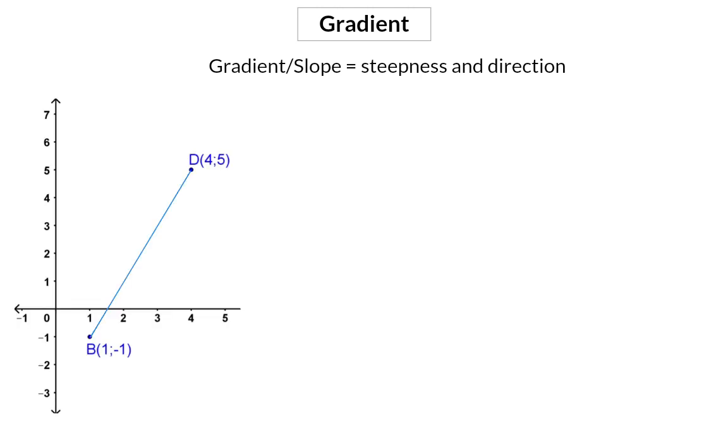We already had a look at this when we did graphs and the straight line, and here you learned that the gradient symbol is an m.